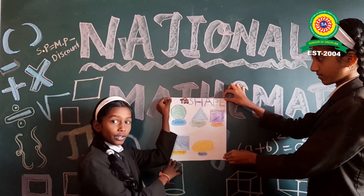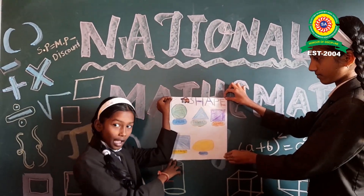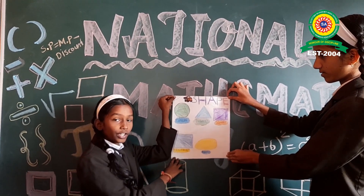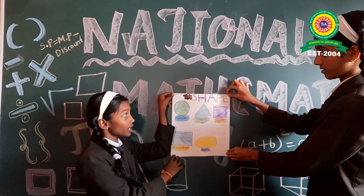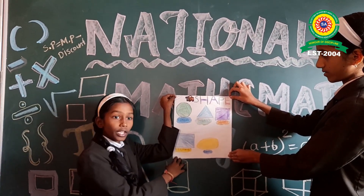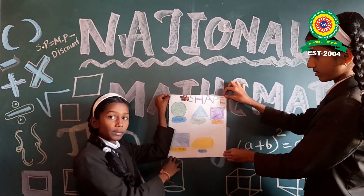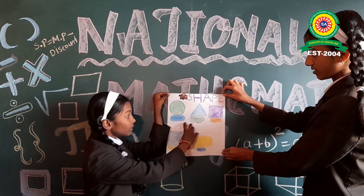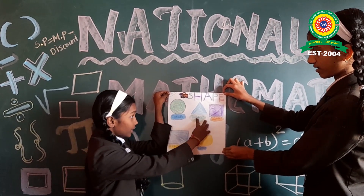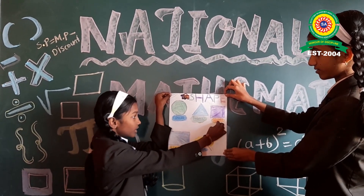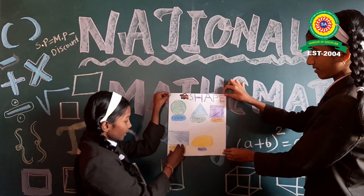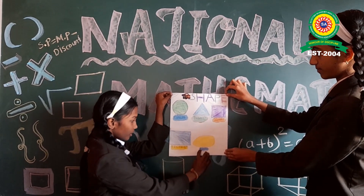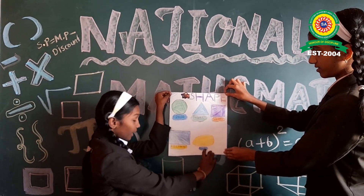Good morning everyone. I am Lakshanya. I am studying in 4th Standard. Today I am explaining shapes: circle, rectangle, square, rectangle, and egg shape.